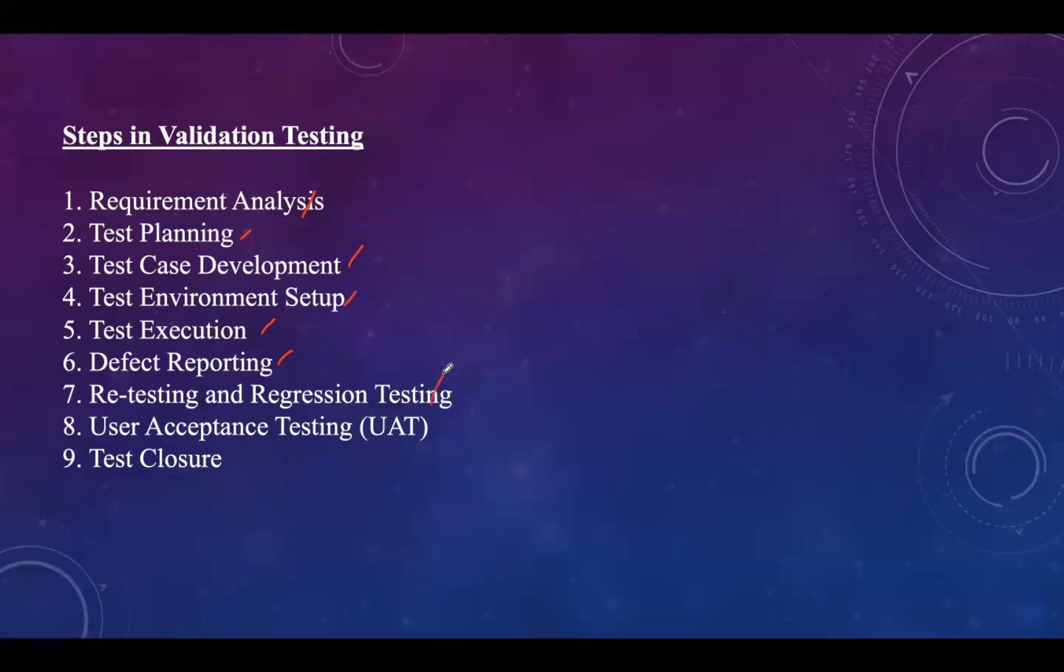Next is retesting and regression testing: after the defects are fixed, perform regression testing to ensure that the changes did not introduce new issues. Next, user acceptance testing should be conducted with actual users to validate that the software meets their needs and expectations. Gather feedback and also make necessary adjustments based on the user input.